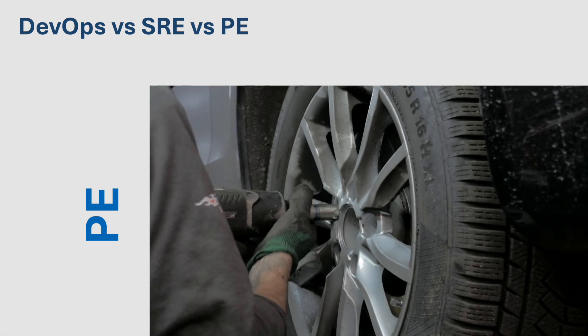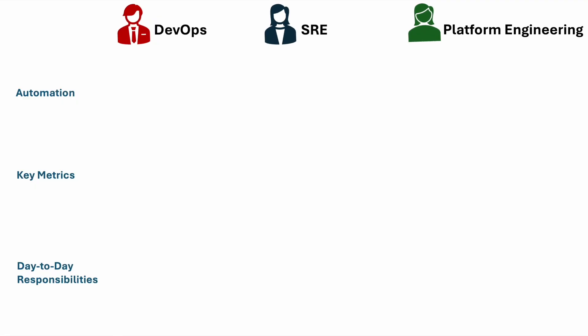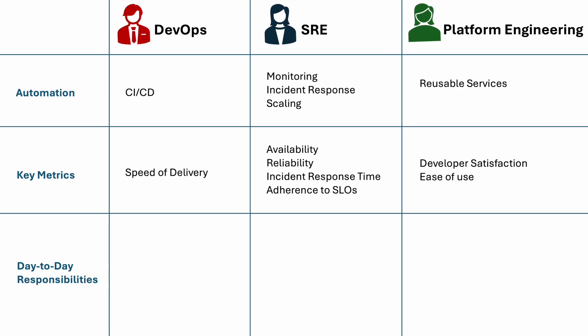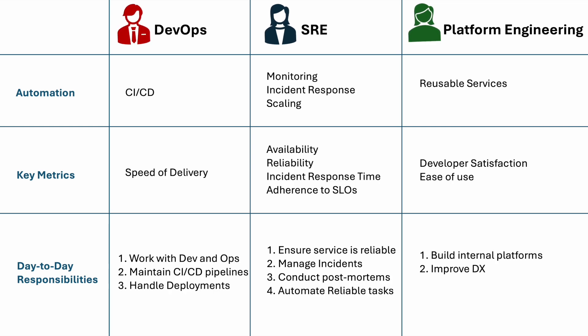In many companies, these teams work closely together throughout the development life cycle. Each role is unique, but they all work towards a common goal: faster, more reliable, and easy-to-manage software. You might have also heard about CloudOps, which is a variant of DevOps focused on specific cloud platforms like AWS, Azure, or GCP. Similarly, MLOps focuses on automating the life cycle of machine learning models, ensuring efficient deployment and maintenance of these models.